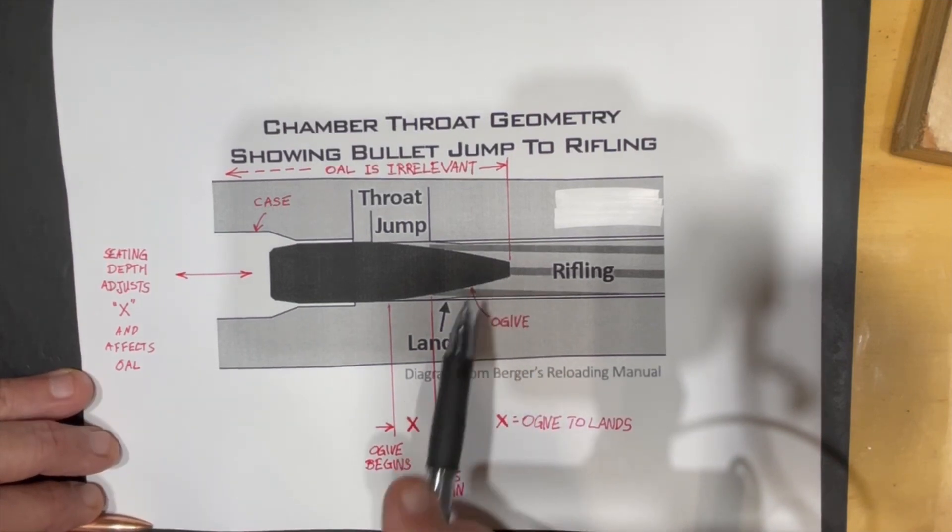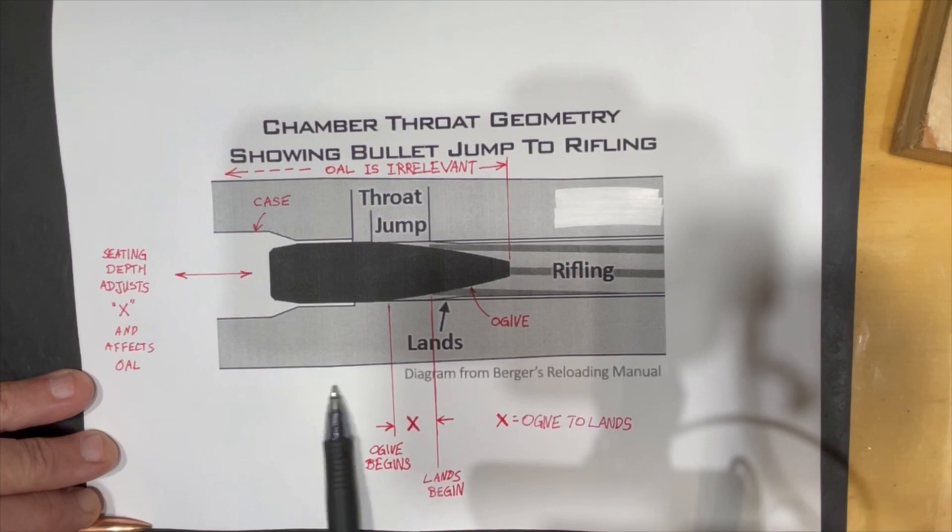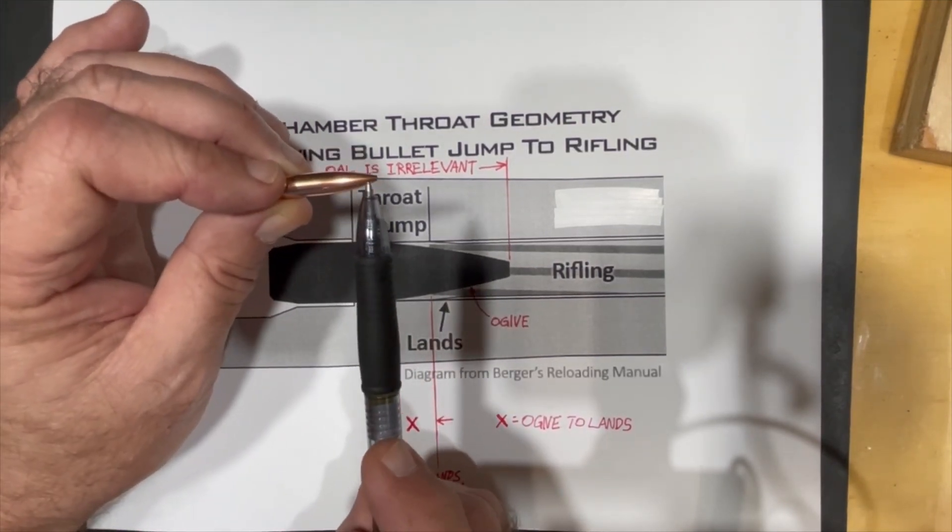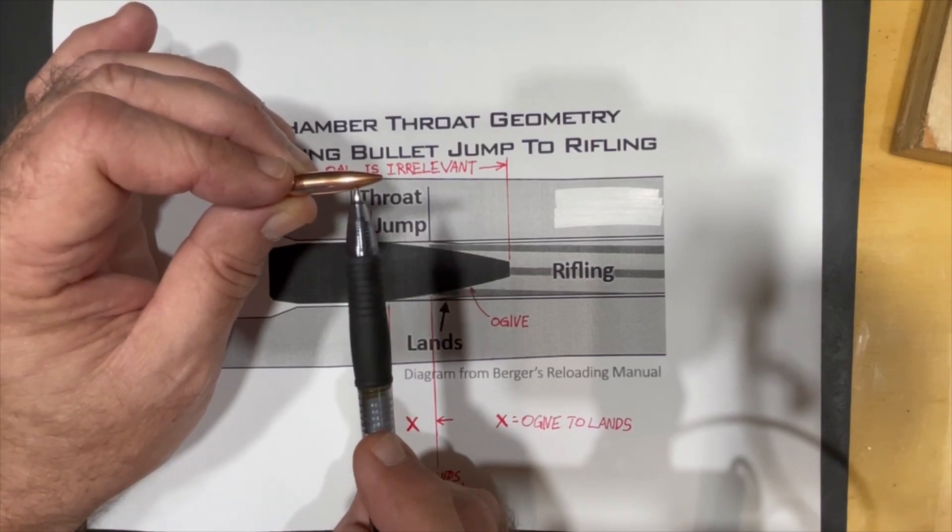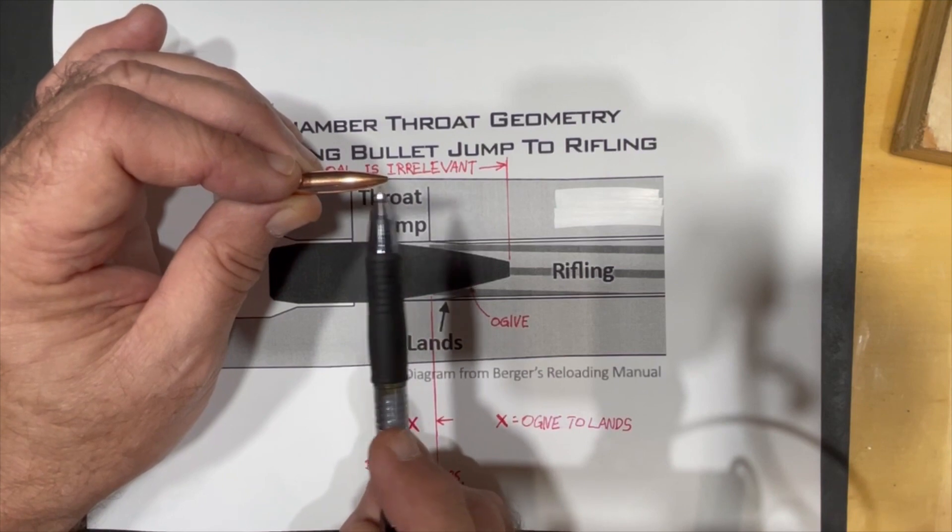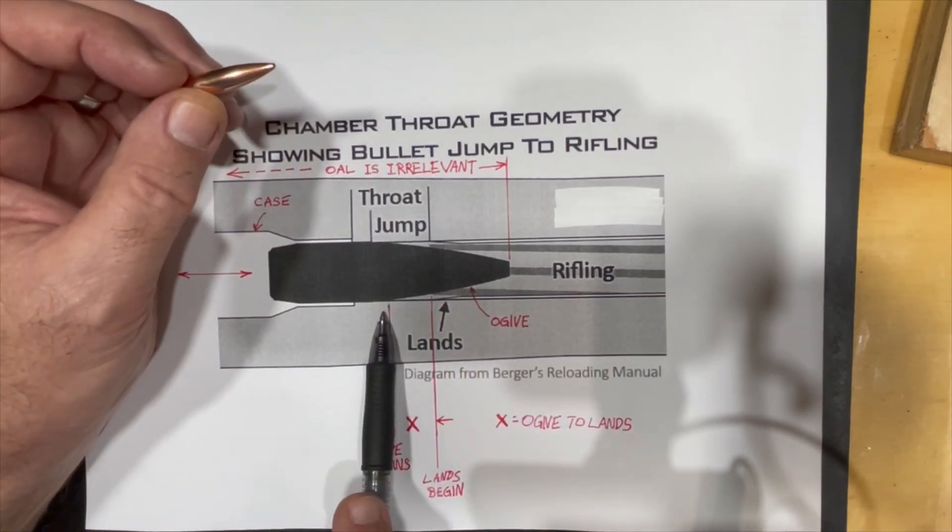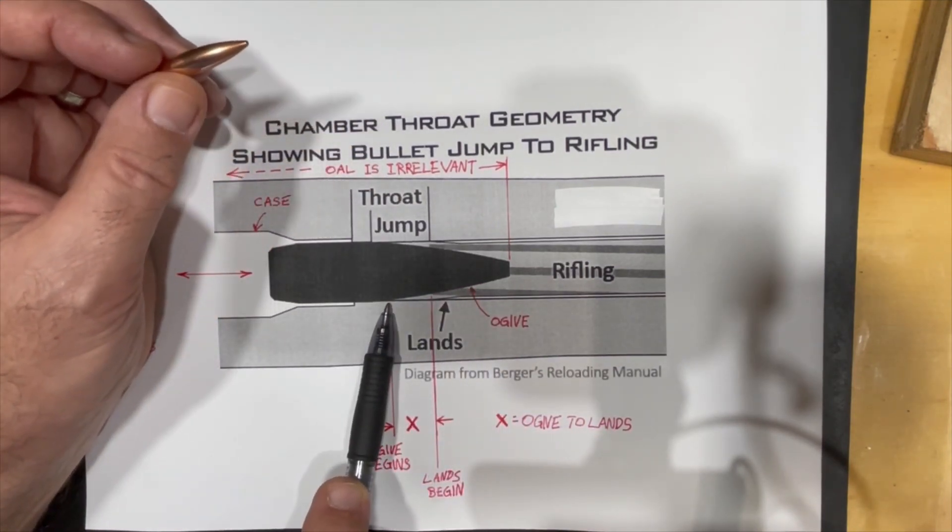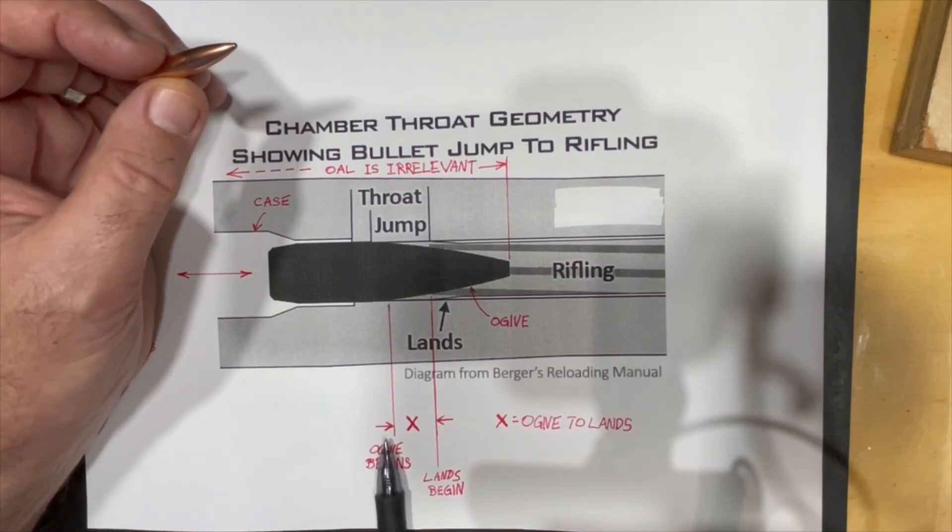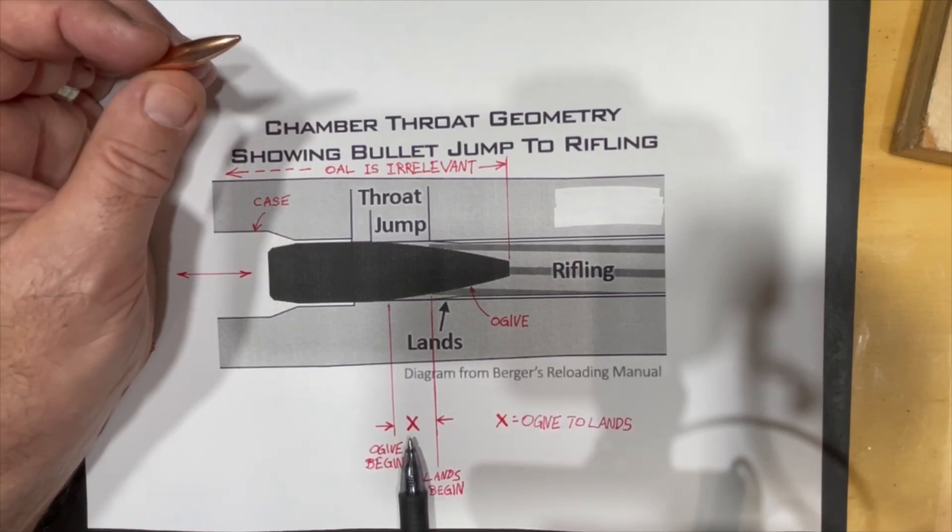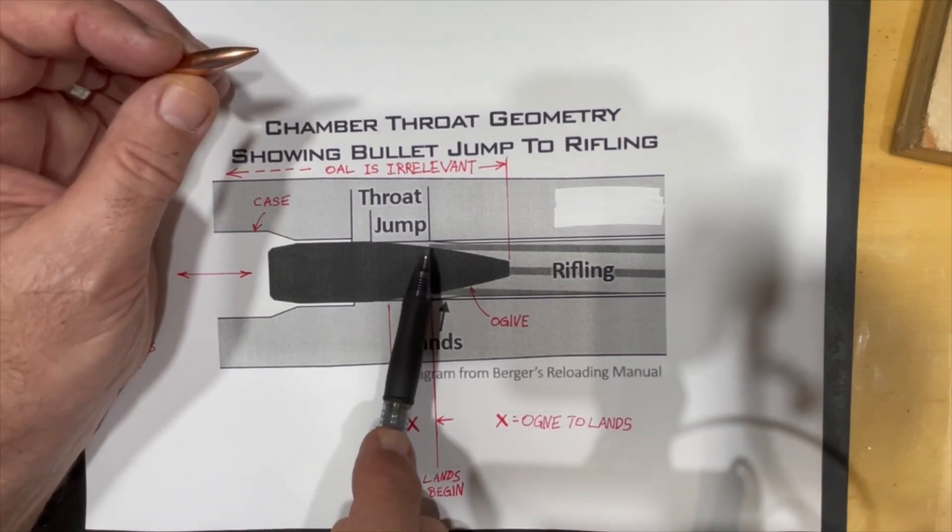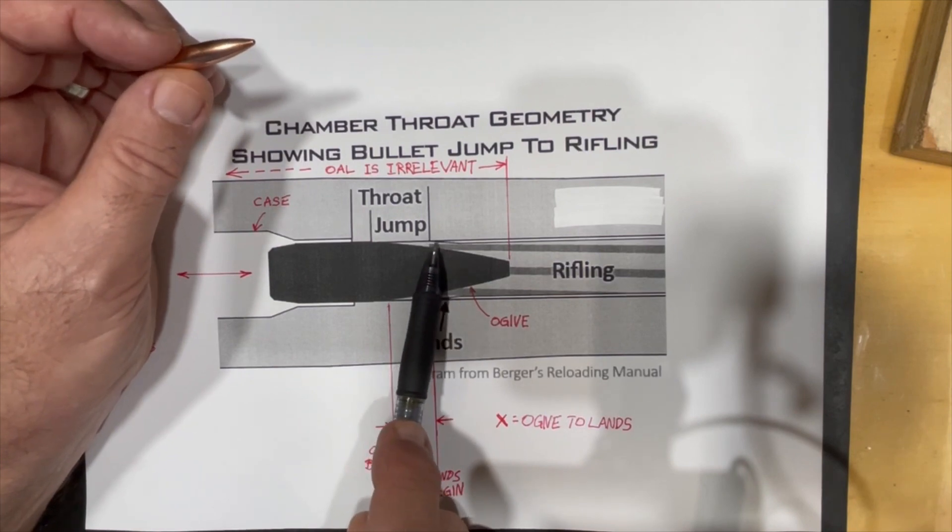One of the things that affects accuracy is the distance from the ogive to the lands. The ogive on your bullet is this curved edge of the bullet from where it first starts to curve onto the tip of the bullet. And here is where the ogive begins, and we want to measure the distance, which is x here.